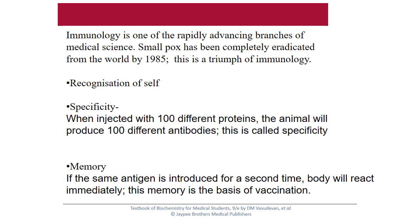The salient features of immunological response are recognition of self, specificity, and the memory of the response. When injected with 100 different proteins, the animal will produce 100 different antibodies — this is called specificity. If the same antigen is introduced for the second time, the body will react immediately. This memory is the basis of vaccination.